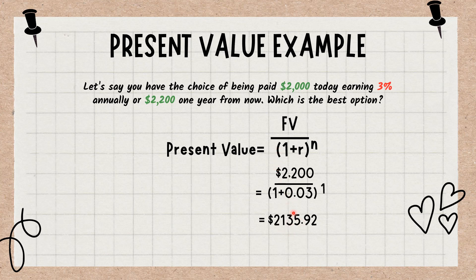So the present value equals $2,135, which is the minimum amount you would need to be paid today to have $2,200 one year from now. In other words, if you were paid $2,000 today based on a 3% interest rate, that amount would not be enough to give you $2,200 one year from now.